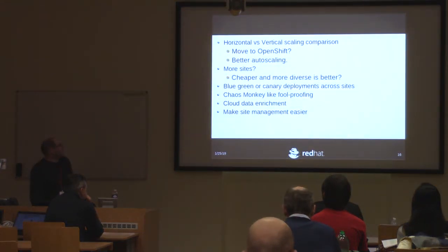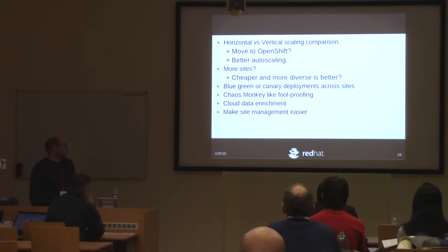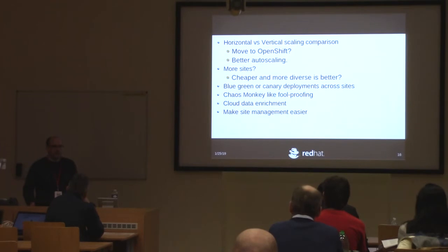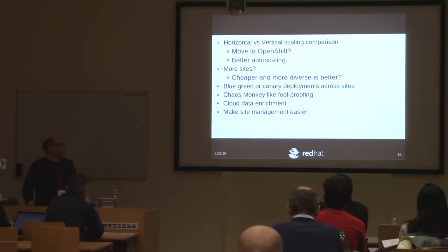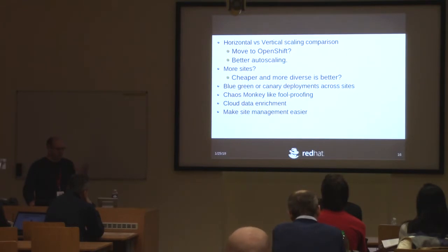Looking at our future, now that we have three sites up and running, we're contemplating what to do next. One thing we haven't tested much is horizontal scaling versus vertical scaling. Right now each data center has four Keycloak nodes with eight cores and eight gigs of memory each. We've seen those taxed at times — usually due to unoptimized custom code rather than core Keycloak itself. We need to figure out whether it makes sense to move to containers, scaling with one core and one gig per container, running maybe 16 or 24 containers instead of four large VMs.